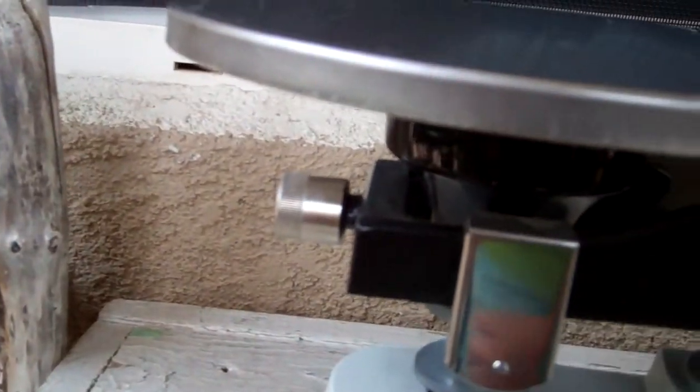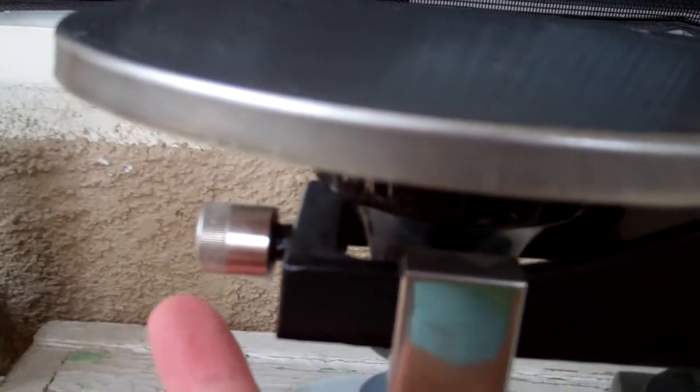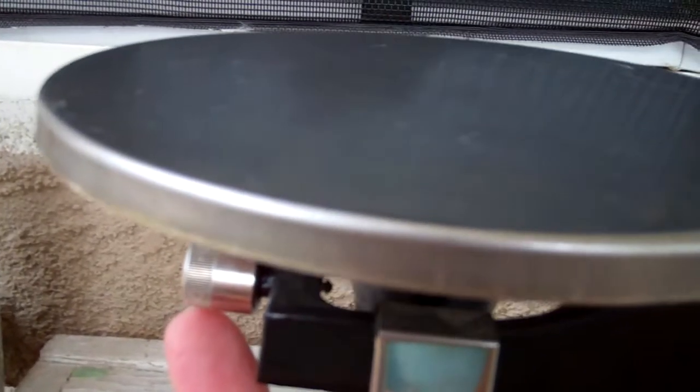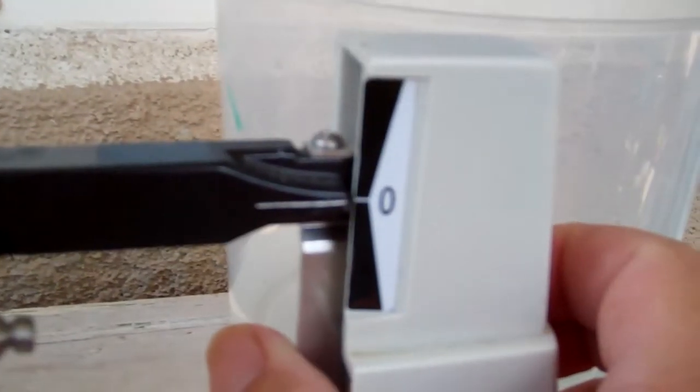You can adjust it with the adjustment knob right here underneath the pan. To make the line, you want it to come down. Then you're going to turn the knob towards you.